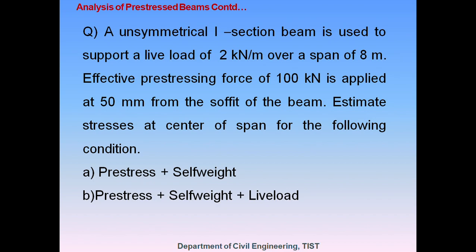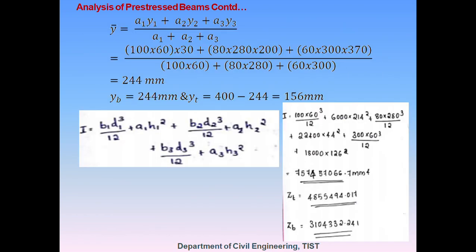Since the section is asymmetrical, we must consider Z = I/Y separately for top and bottom. For a symmetrical section, Y is the same for top and bottom fibers, but for an unsymmetrical section, Y-top and Y-bottom must be found separately. To calculate these, we first need to find the center of gravity.